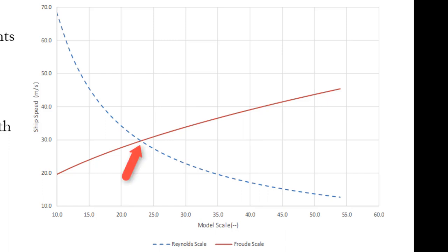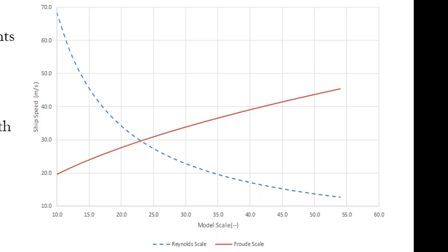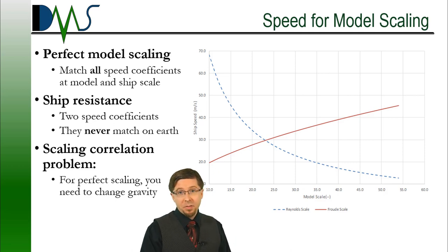That theory, though, has some severe practical limitations. First, that intersection point changes depending on the speed that you're picking. So, to achieve perfect correlation, we're going to need to construct a different model for each speed that we want to test. And ship models are not cheap. And on the list of infeasible things, another one would be artificial gravity.